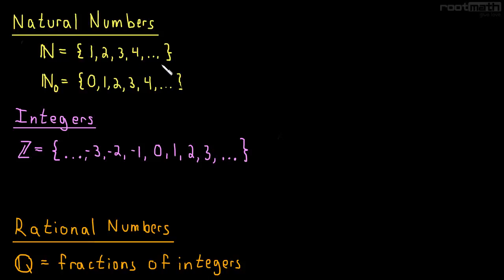So we start with the natural numbers, which are sometimes called the counting numbers, because we start at one and we just count up from there: 1, 2, 3, 4, 5, 6, so on and so on until we get to 100, a million, a trillion, and it just keeps going.